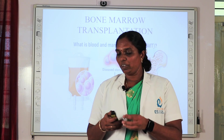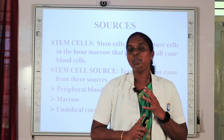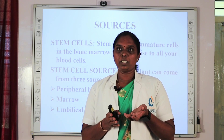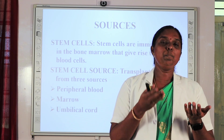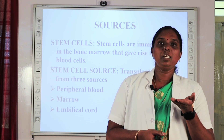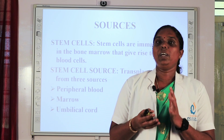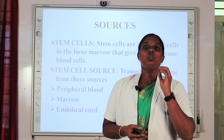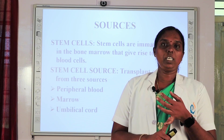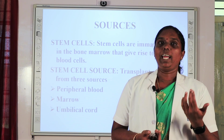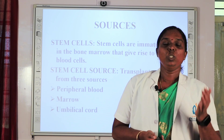Next, we move on to sources of bone marrow transplantation. First, what are stem cells? Stem cells are immature cells that replace the bone marrow and give rise to blood cells. There are mainly three sources of stem cells: first is peripheral blood, second is bone marrow, and third is umbilical cord.